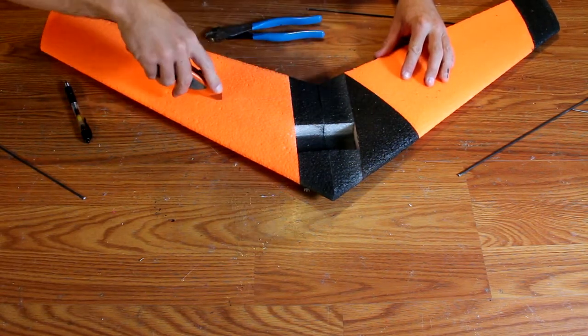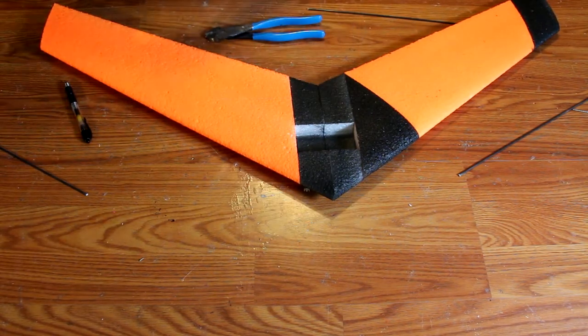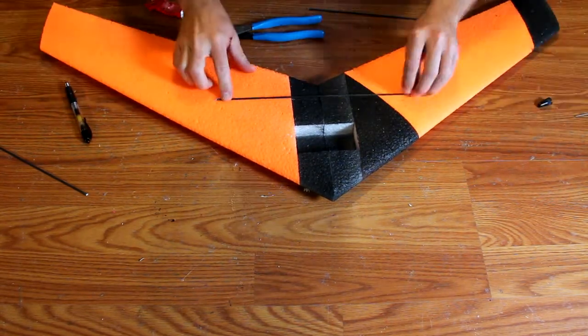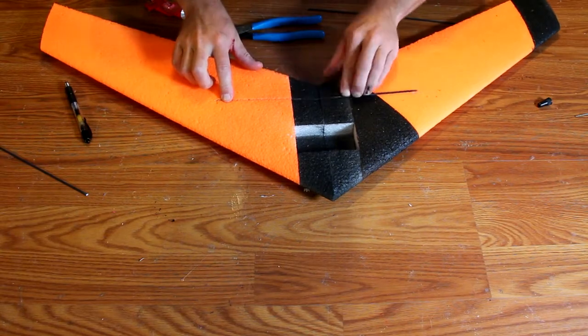Simply make a mark and then cut down into the airplane approximately one eighth inch, embed that cut with glue, then embed your spar.